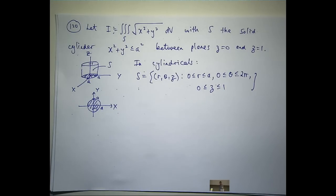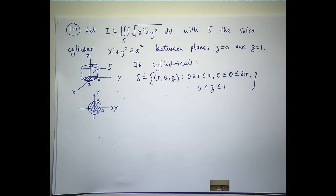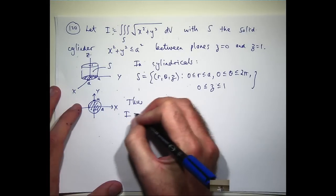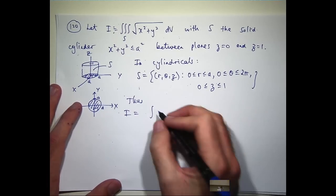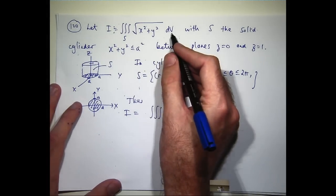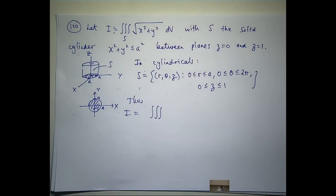Now, just like when we looked at polar coordinates for double integrals, we do have to replace this dv with something. But it's not very difficult. We replace it with, instead of the dv here, we replace it with r dz dr d theta.